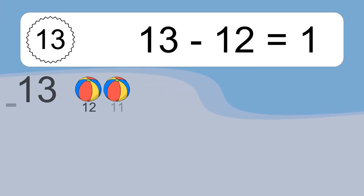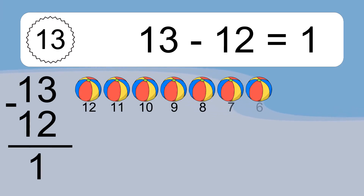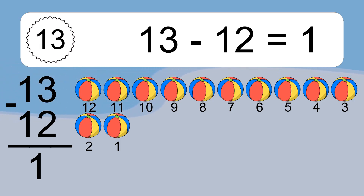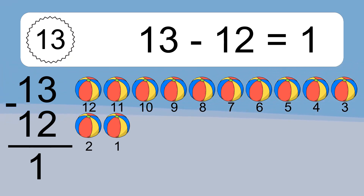13 minus 12 equals what? 13 minus 12 equals 1. Let's count it: 12, 11, 10, 9, 8, 7, 6, 5, 4, 3, 2, 1.